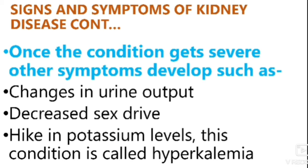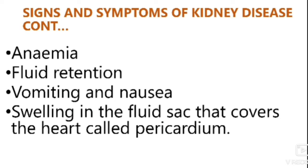If the condition becomes severe, you can see more changes in the urine output. An elevated level of potassium in the blood is called hyperkalemia. Anemia affecting the hemoglobin level will happen. Fluid retention — excess fluid build-up inside the body, also known as edema or water retention — will occur. Nausea and the feeling of vomiting will also be present, along with heart-related swelling.